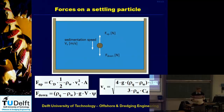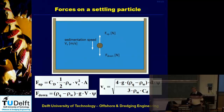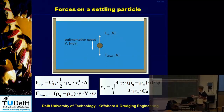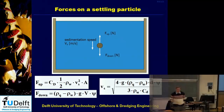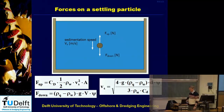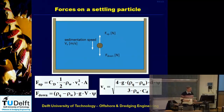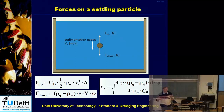First, the settling process. We assume a spherical particle — in reality particles are angular, but we assume a sphere. That spherical particle is subject to two forces: an upward force and a downward force. When those two forces are equal, that is the terminal settling velocity — the final velocity a particle reaches after accelerating from rest.